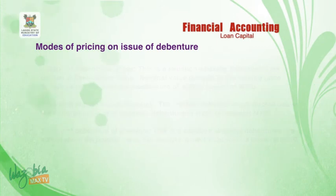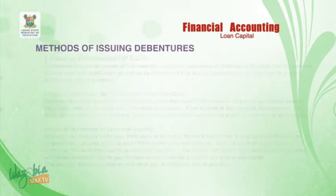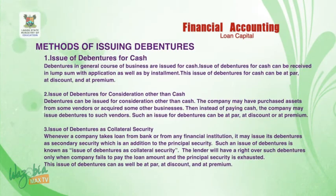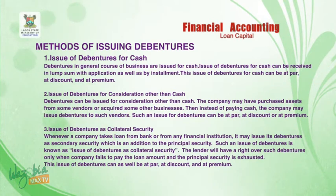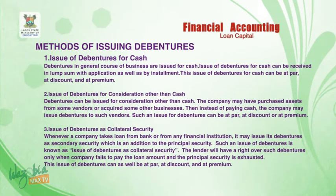There are basically three methods of issuing debentures: issue of debentures for cash, issue of debentures for consideration other than cash, and issue of debentures as collateral security. Debentures issued for cash — the general course of business — can be received in a lump sum with application as well as by installment.